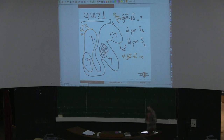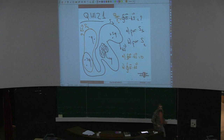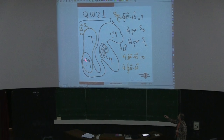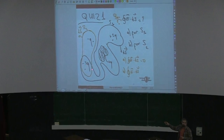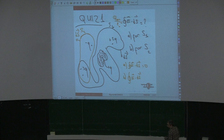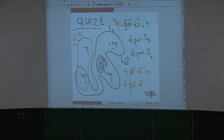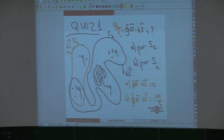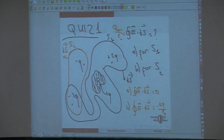Now let's look at part B. ∮E·dS is again the total charge inside the surface divided by ε₀. The total charge inside this surface is -q minus 3q, so the total charge is -4q divided by ε₀.